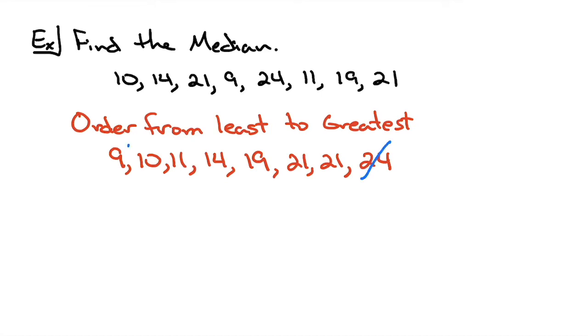So the 24 crossed off with the 9. Now I'm going to cross off the 21 with the 10. I'm going to alternate in this fashion. So the 21 with the 11. Now what's going to happen, you're either going to get down to exactly one number in the middle, which that would be your median. Or in this case, we have two numbers now left in the middle. So then basically I have to average those or add them up and divide by two. So I'm going to take the 14 plus the 19 and then divide by two. And that's going to come out to be a 16.5.